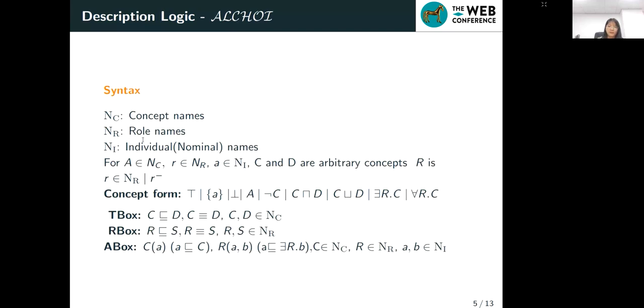We denote the set of concept names as this, the role names as R, and the individual names as I. For the elements from these sets, we can compose some concepts like this. And the T-Box is composed with the subclass of axioms and the equivalent axioms between the concepts and the R-Box composed with the roles, the subclass of axioms or the equivalent axioms between roles.